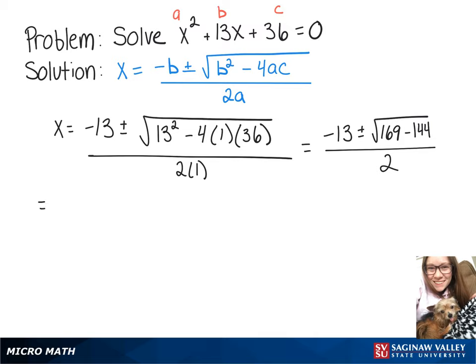Simplifying it even further, we get negative 13 plus or minus the square root of 25 over 2. Taking it one step further, that ends up being negative 13 plus or minus 5 over 2.